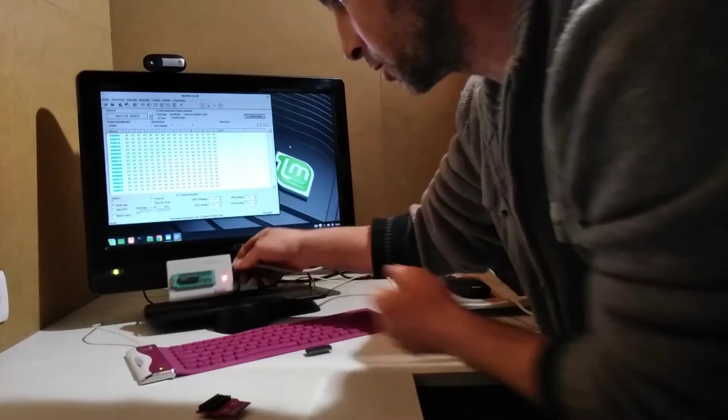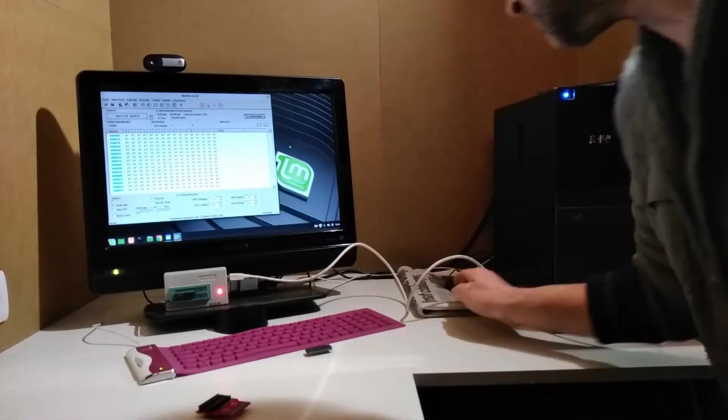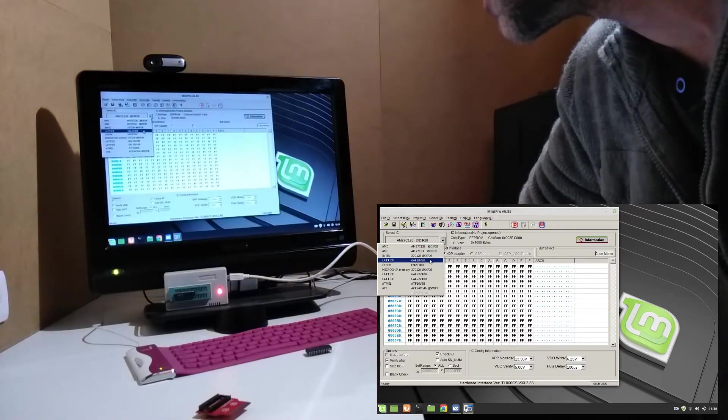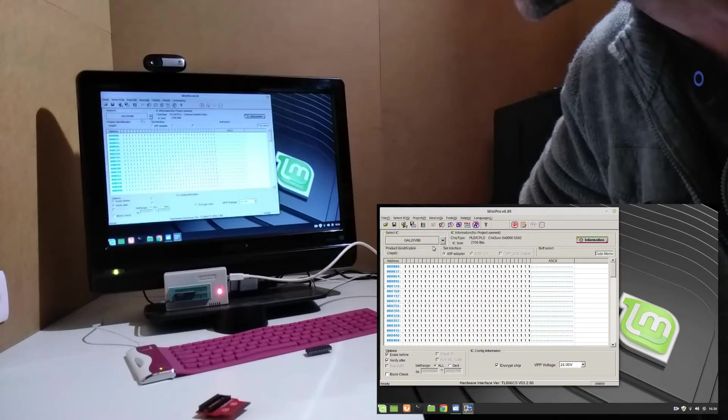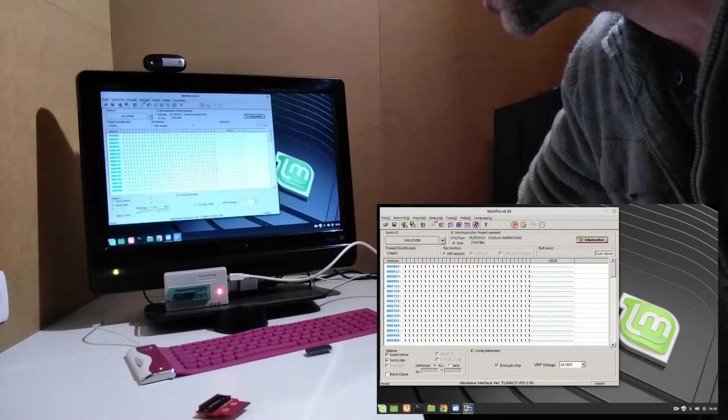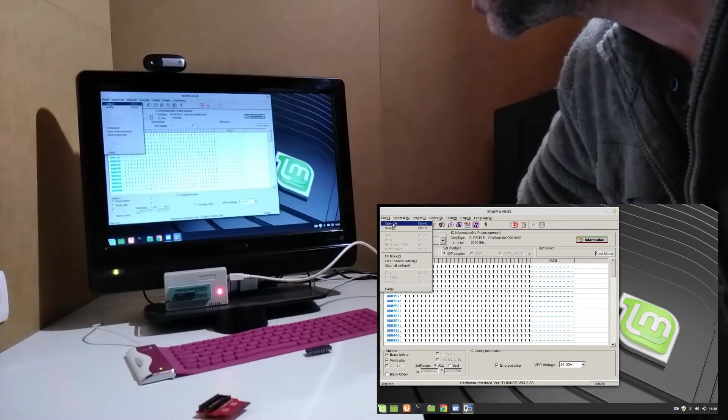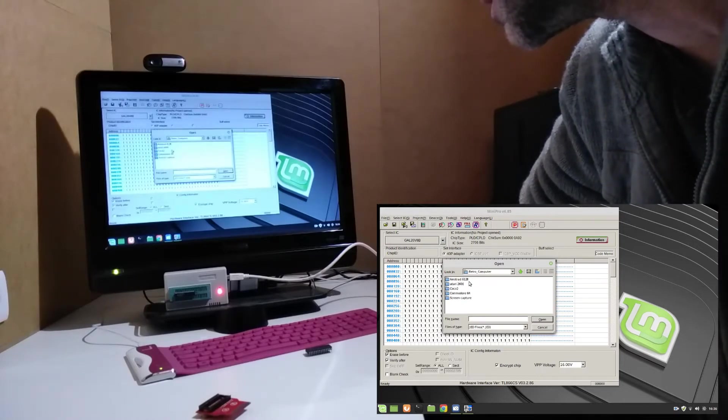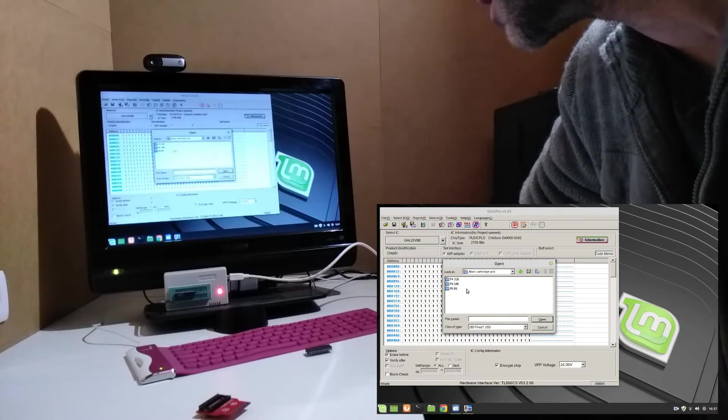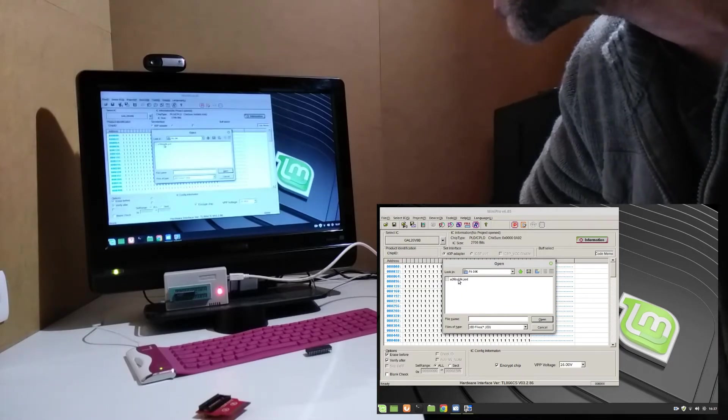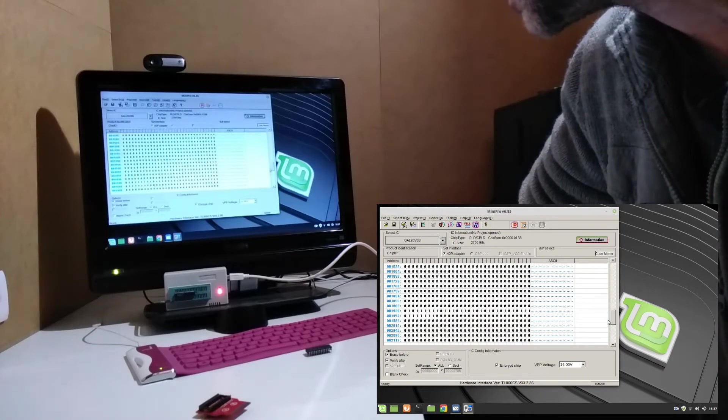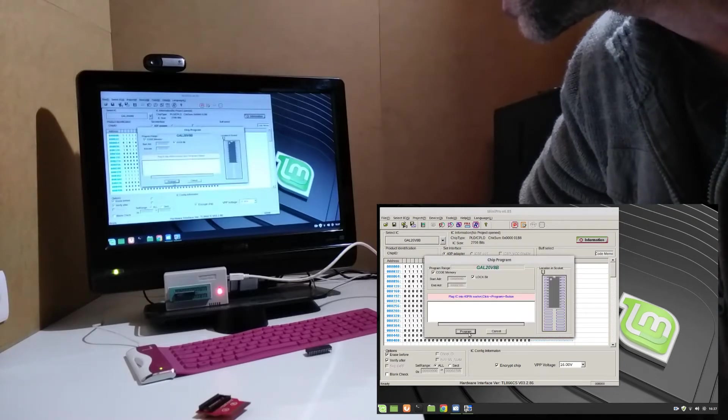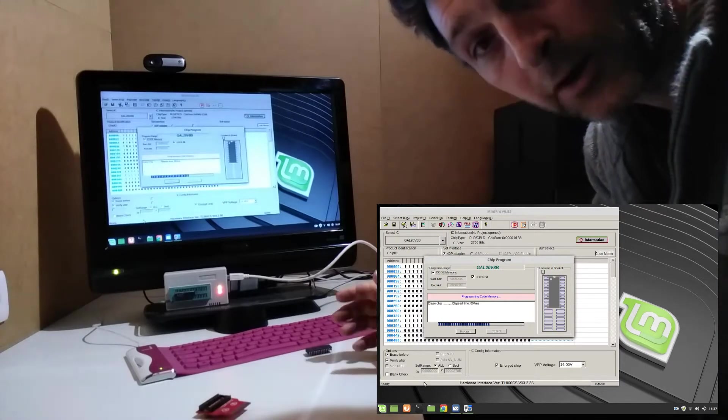I want to select the correct type of chip here, so I've got my GAL 20V8B which is that one there. Now I want to open the 16-kilobyte bank switch code. I've got it in here - Atari cartridge PCB - and here we are for 16K, the F6. All I need to do is click on program. It will erase the GAL and program it with the new code and verify it. There we go, programming successful.